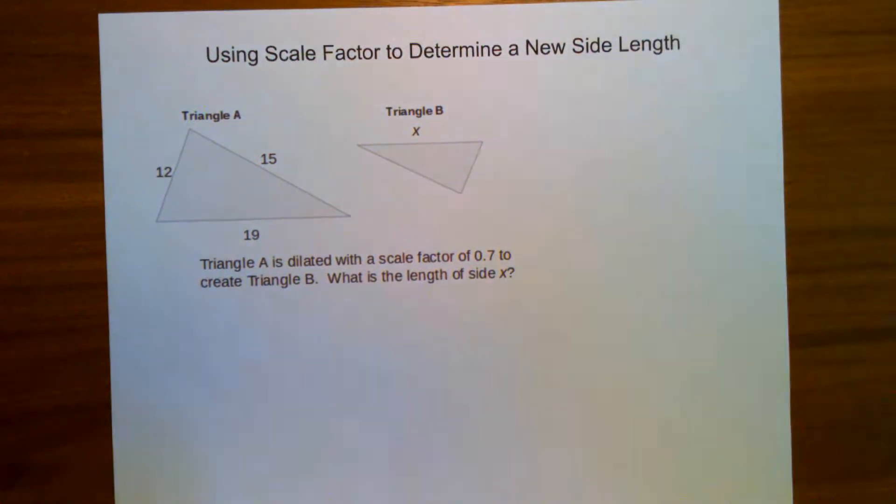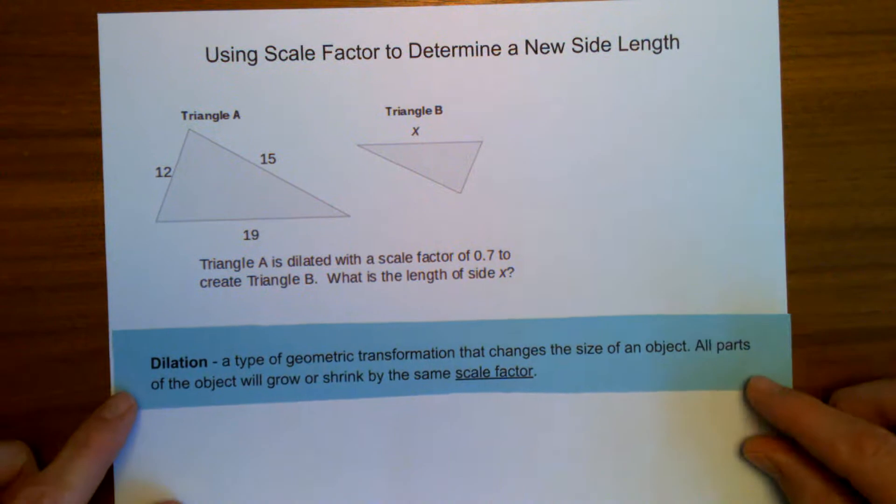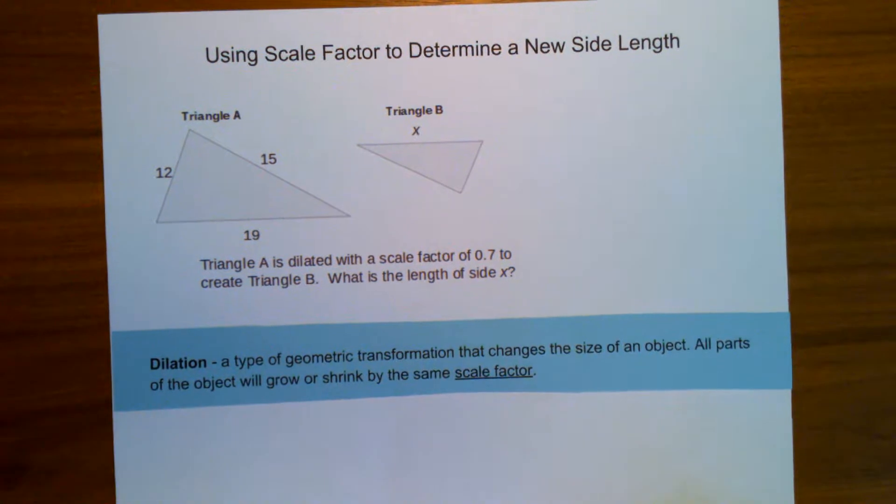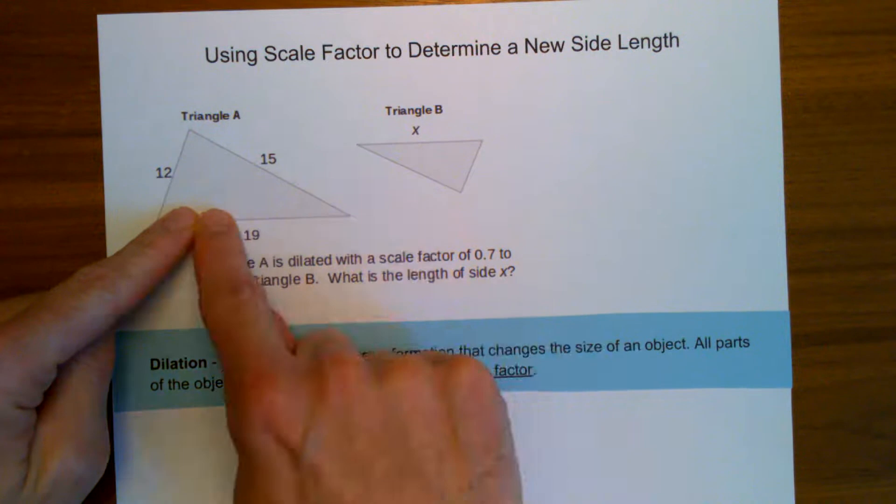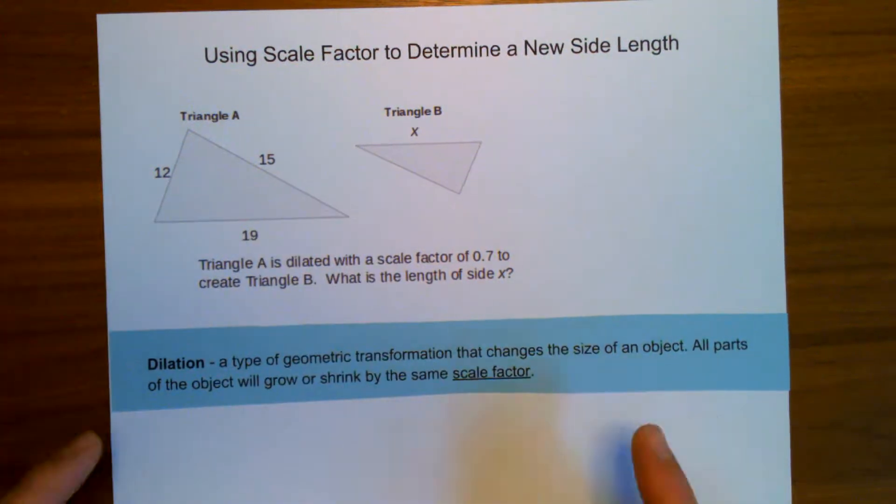So first of all, dilated. What does it mean to dilate something? What is a dilation? A dilation is a type of geometric transformation that changes the size of an object. So in this case, yeah, the triangle is shrinking in this case.